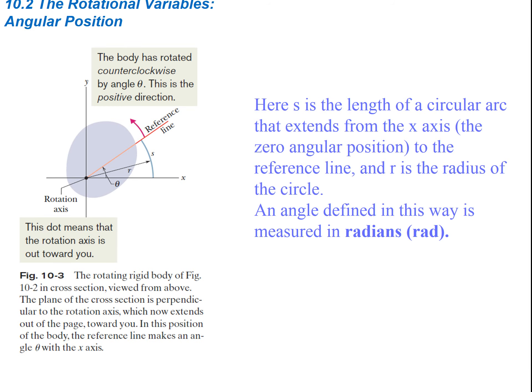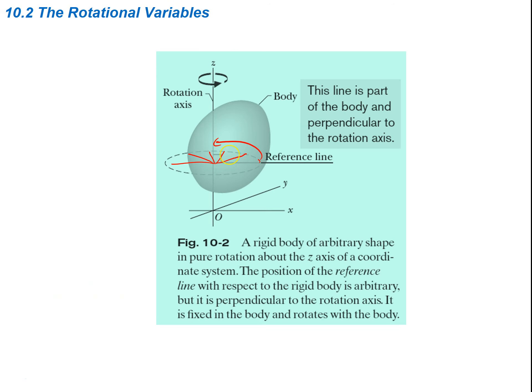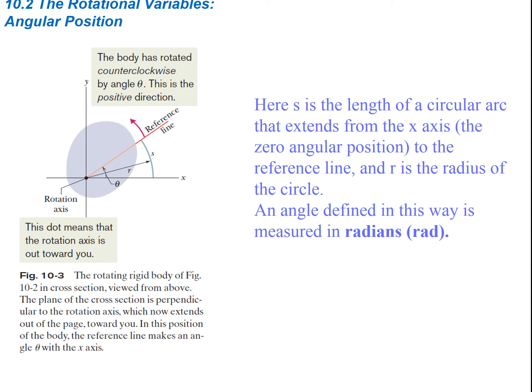Now let's look at angular position. We take the same object but now view it from the top down — looking straight down at it. From this view, we can see that it's rotating about the z-axis, which is coming straight out of the page. A reference line rotates around in the x and y directions. The body has rotated counterclockwise by the angle theta, and counterclockwise is the positive direction.